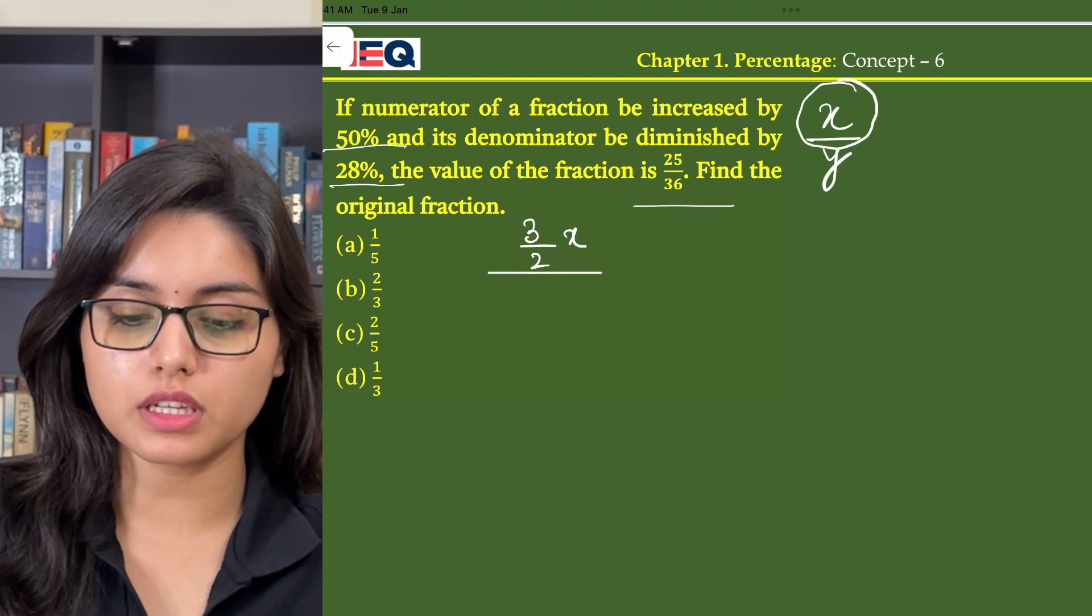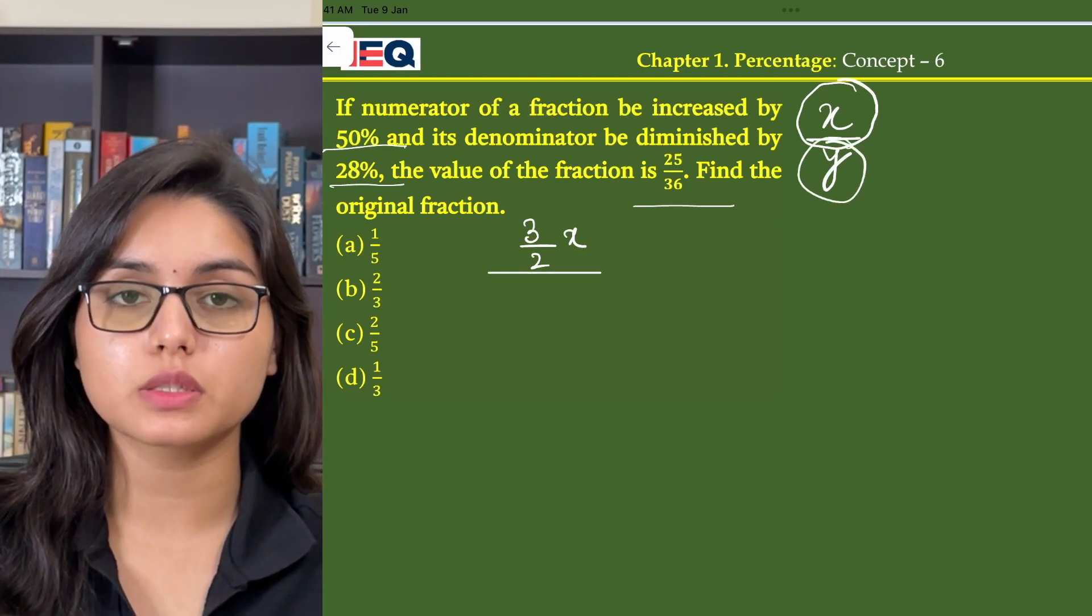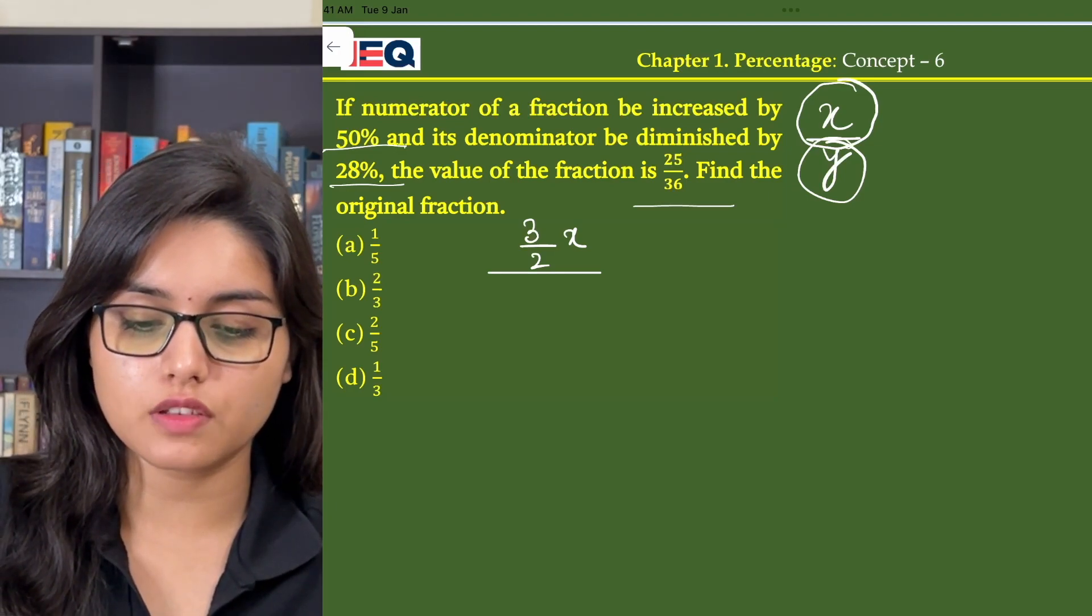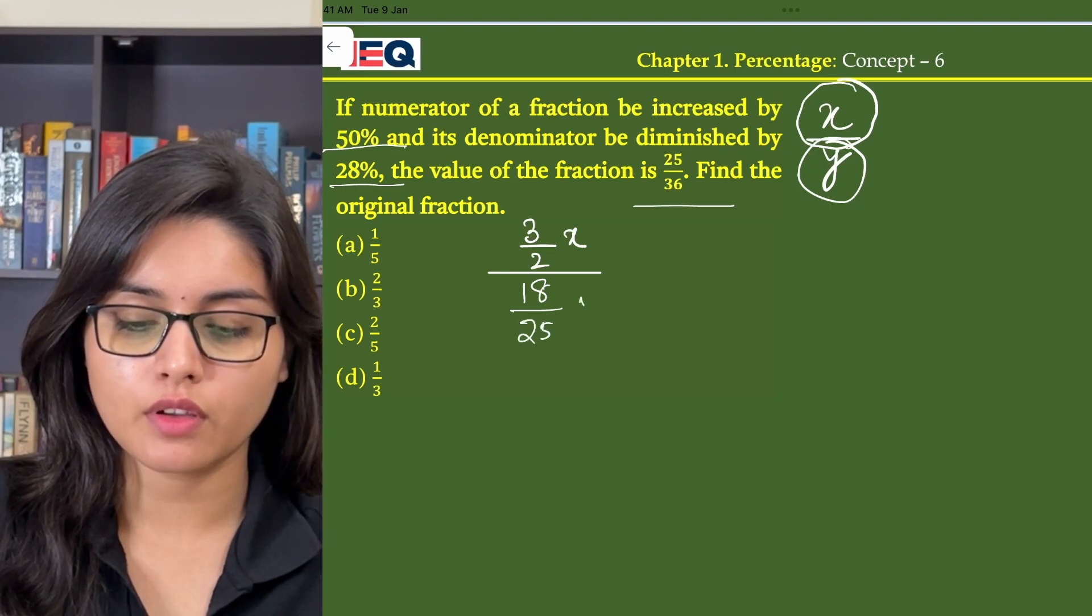And the denominator that is my y was diminished by 28%, that is y minus 28% of y, which gives us 18 by 25y.